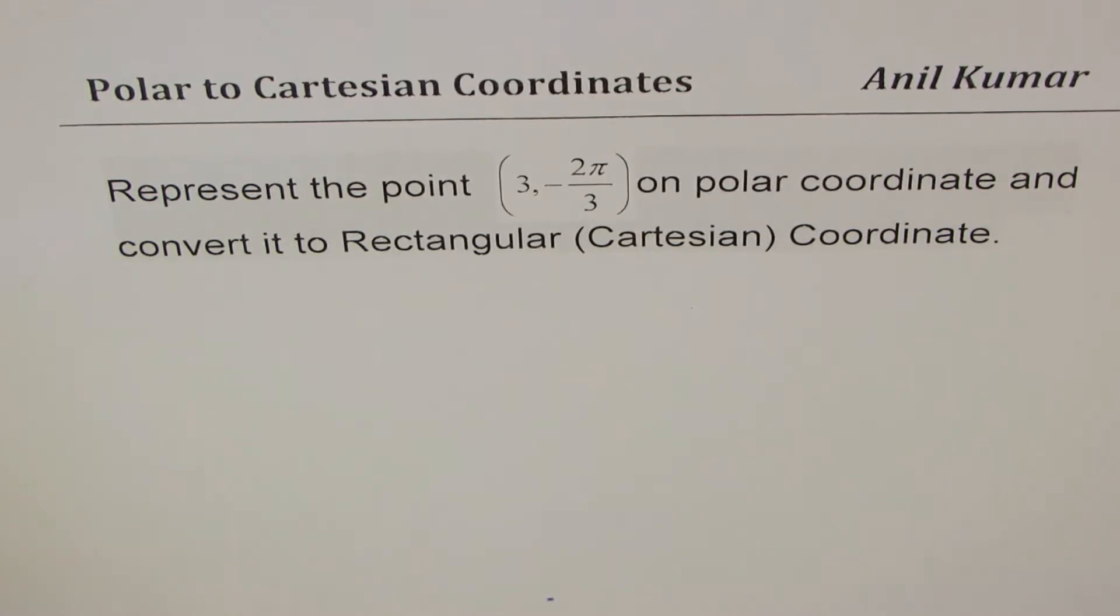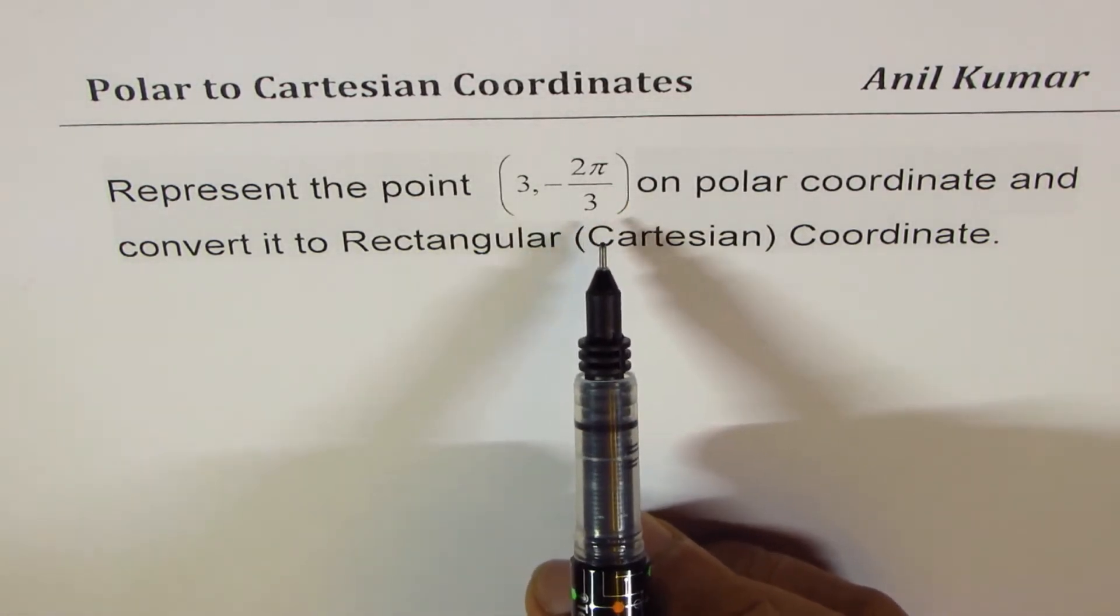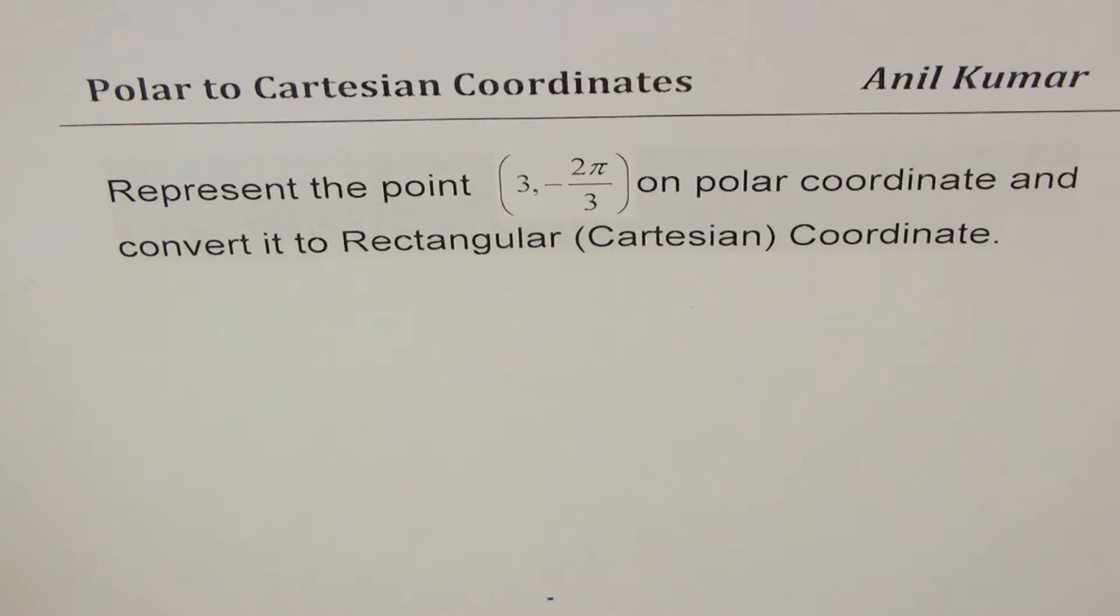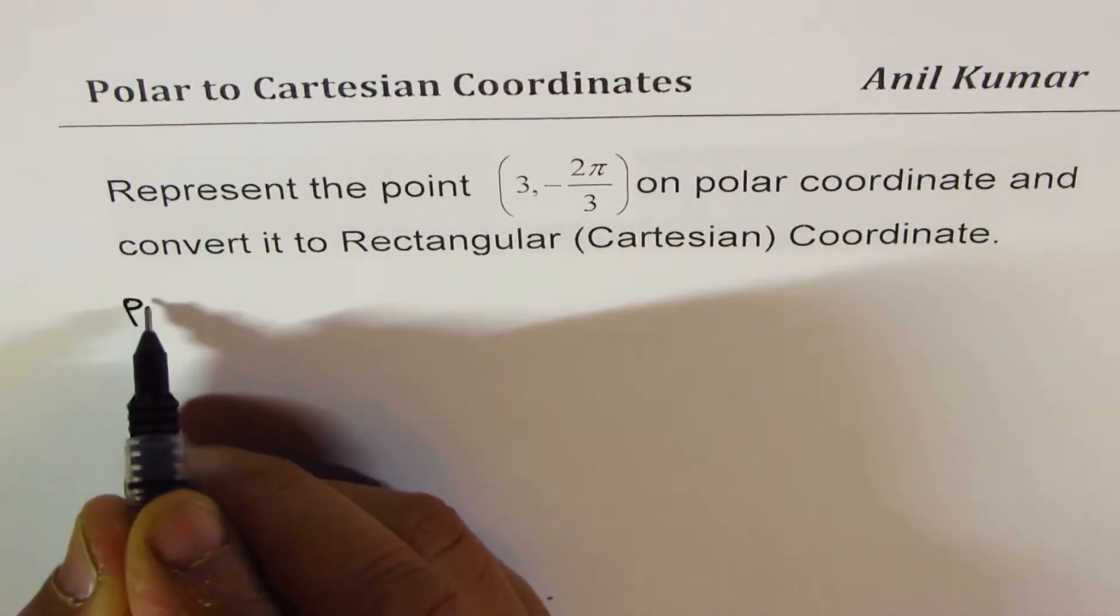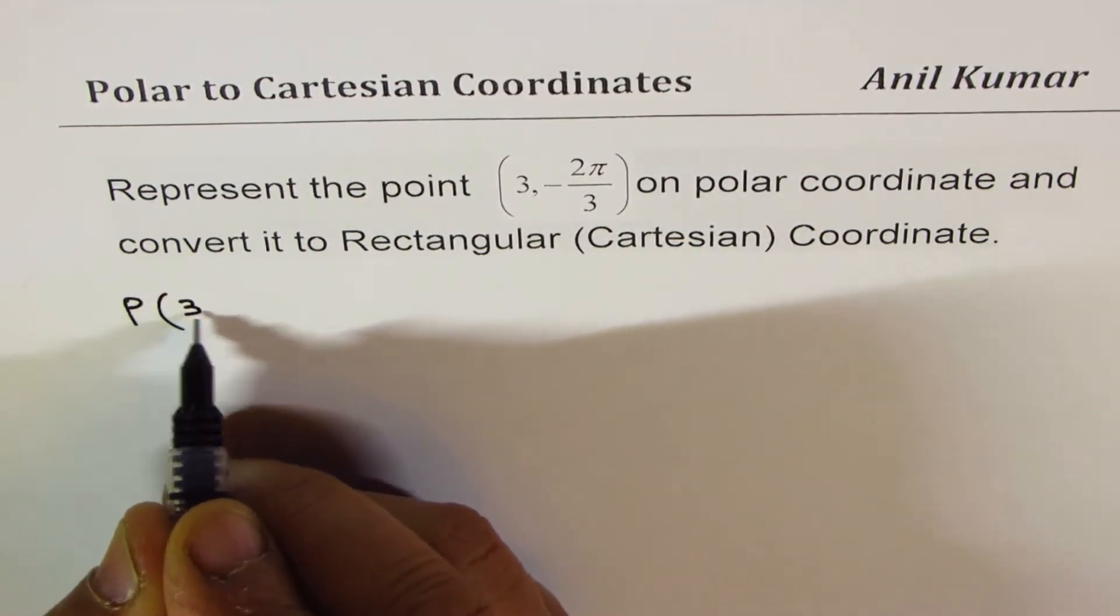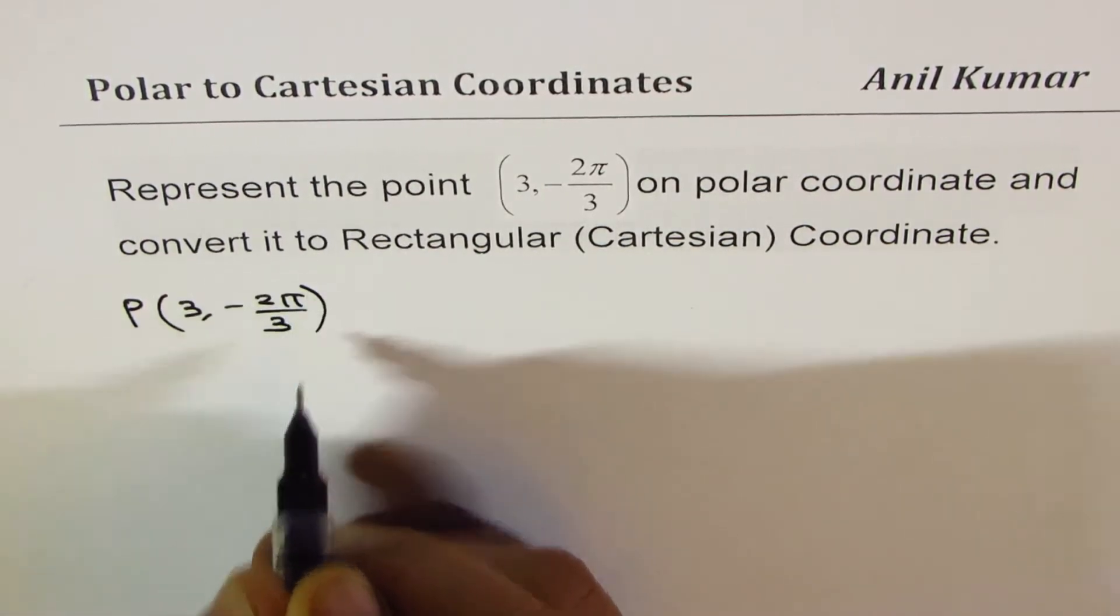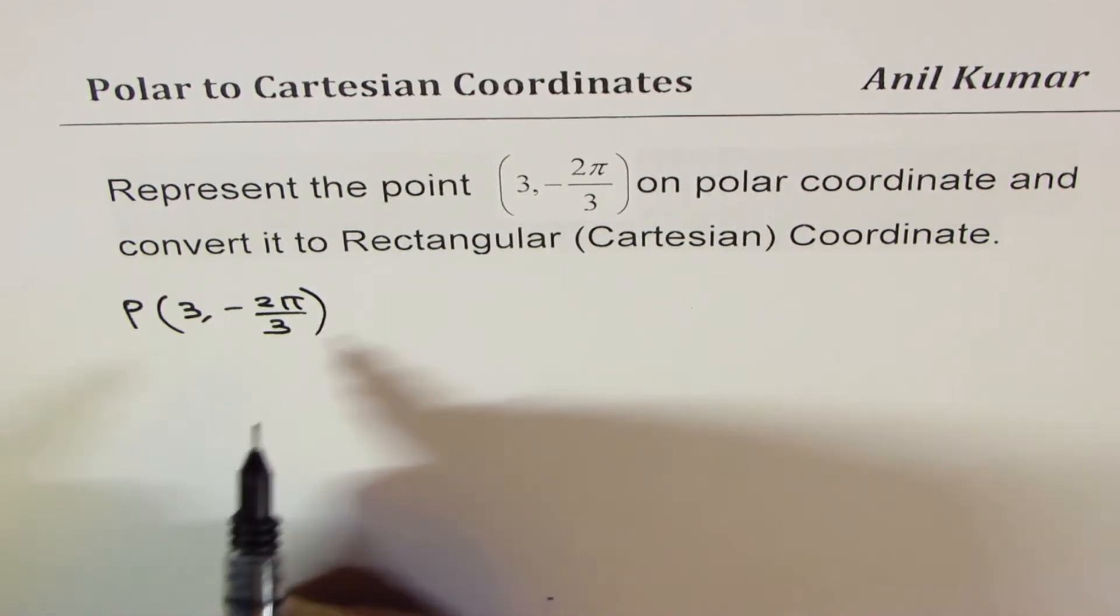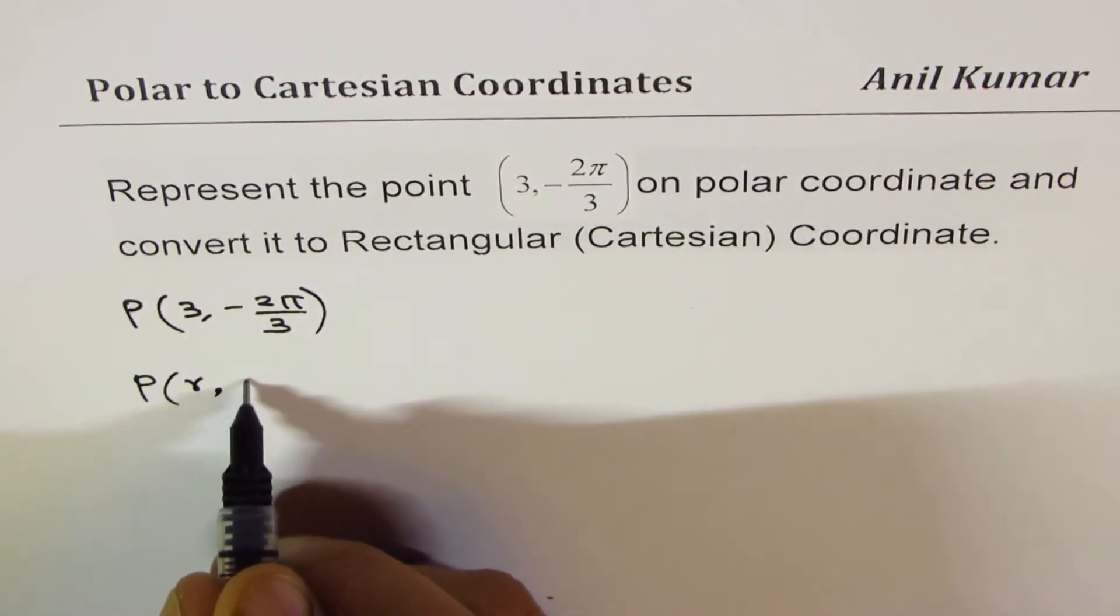The question here is: represent the point (3, -2π/3) on polar coordinates and convert it to rectangular or Cartesian coordinates. So we are given a point, let's name this point as P as (3, -2π/3).